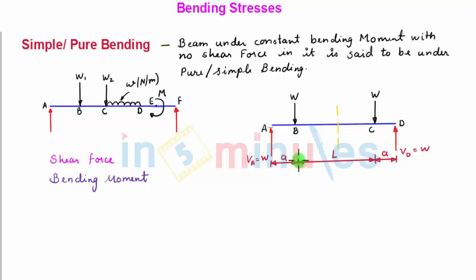Due to the symmetry, the support reactions at A and D will be the same, W and W. If we plot the shear force and bending moment diagram for this beam, we see that segments AB and CD are subjected to shear forces of W and minus W respectively, whereas segment BC is subjected to zero shear force.